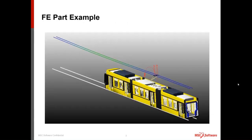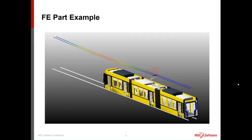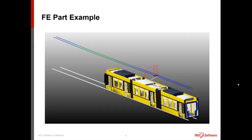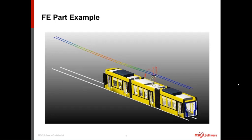One example is an overhead cable tram — a public transit vehicle going down the street. This highlights that we do have contact between rigid bodies and the FE part, and the FE part also supports contact with other FE parts.